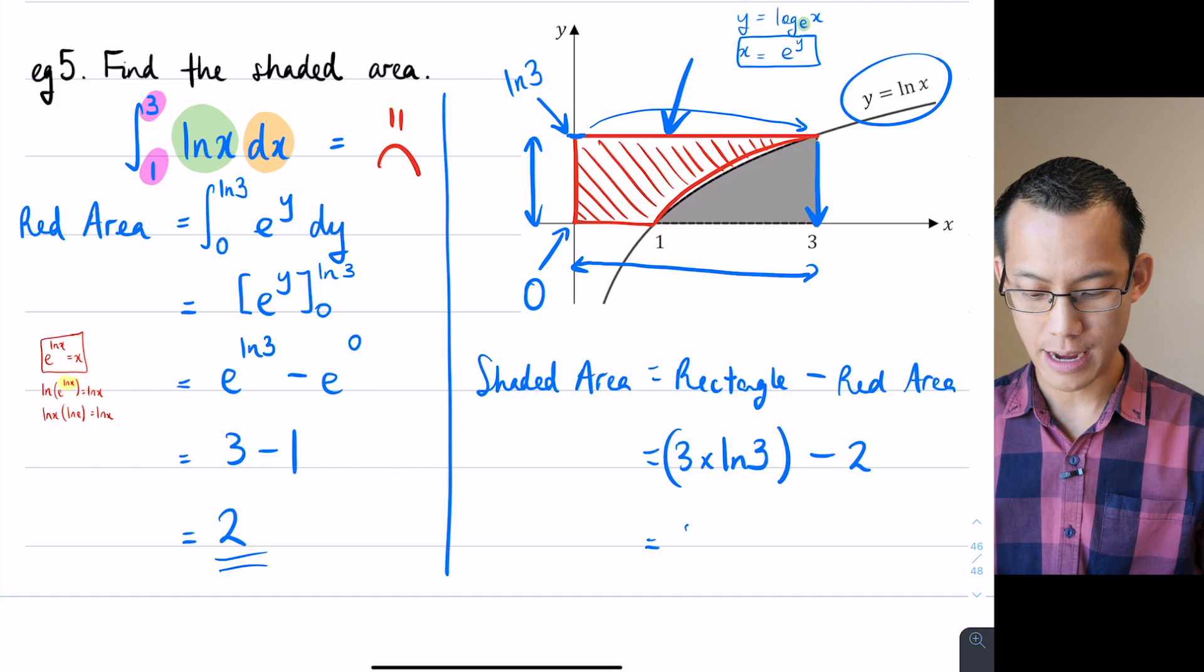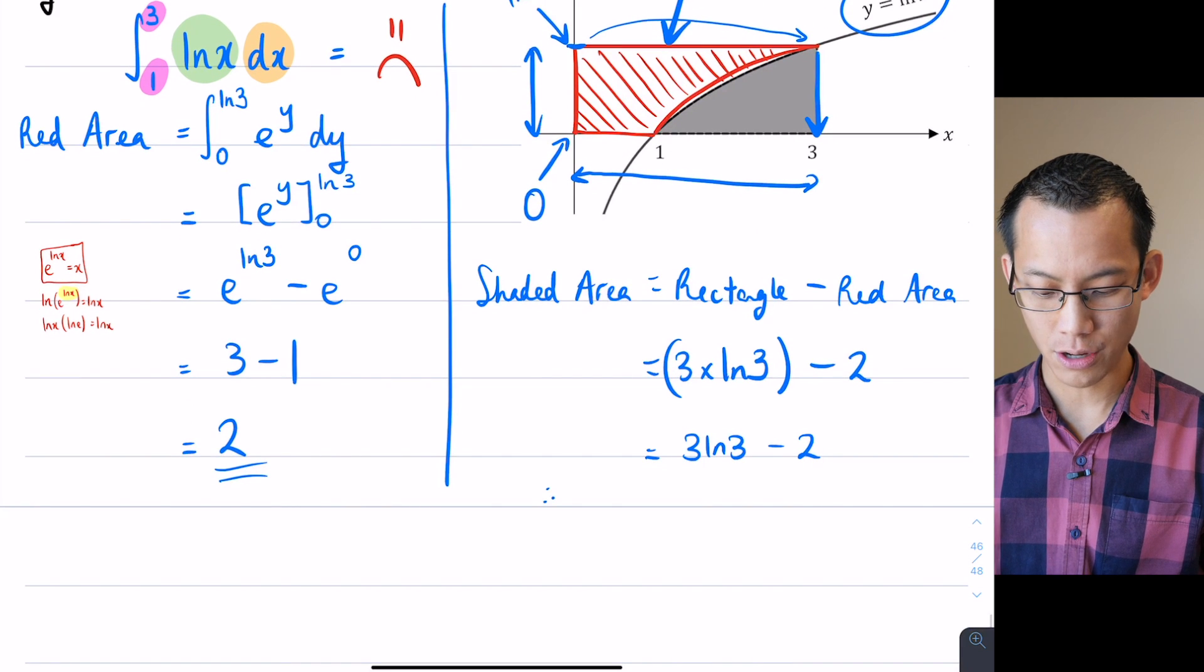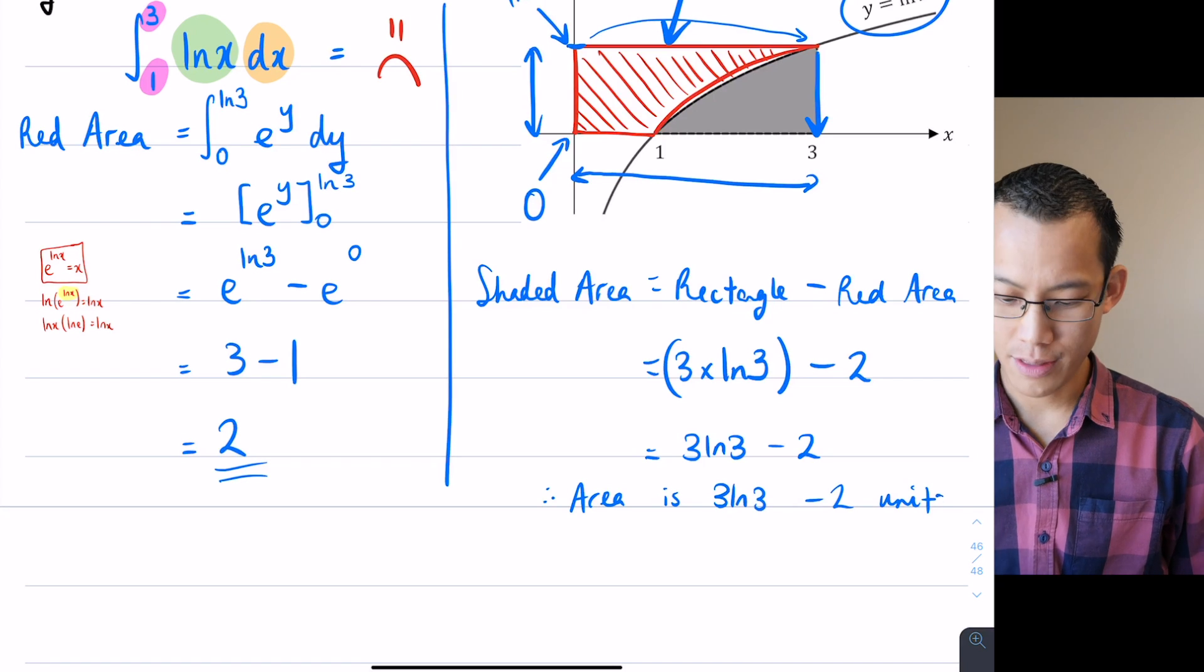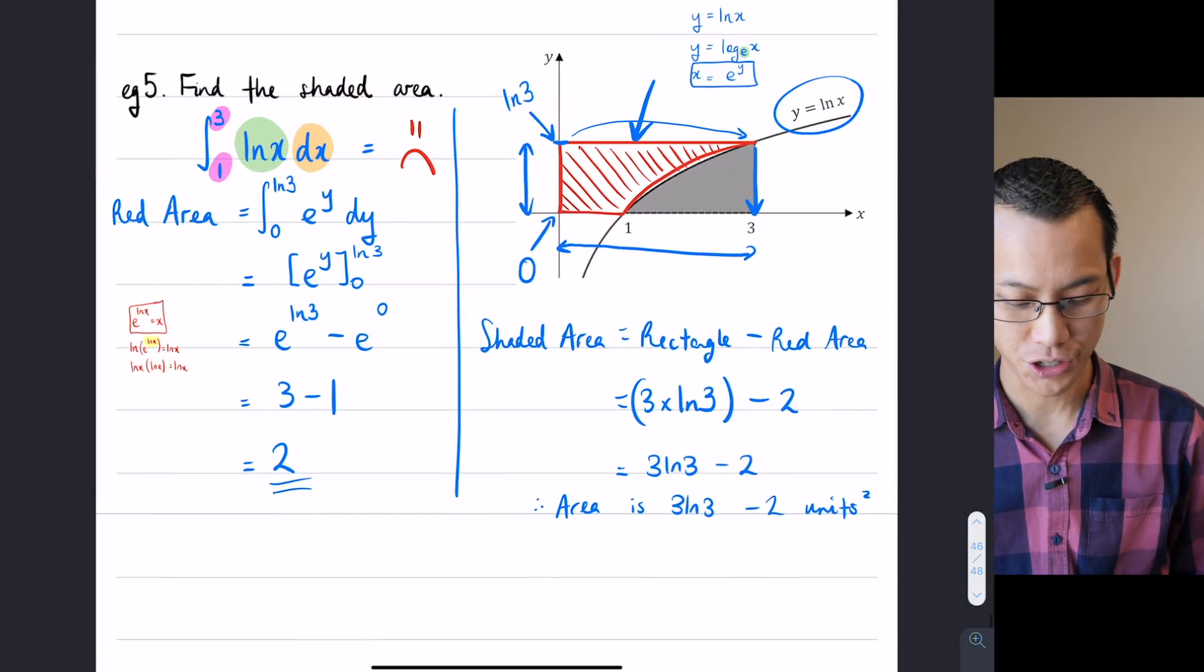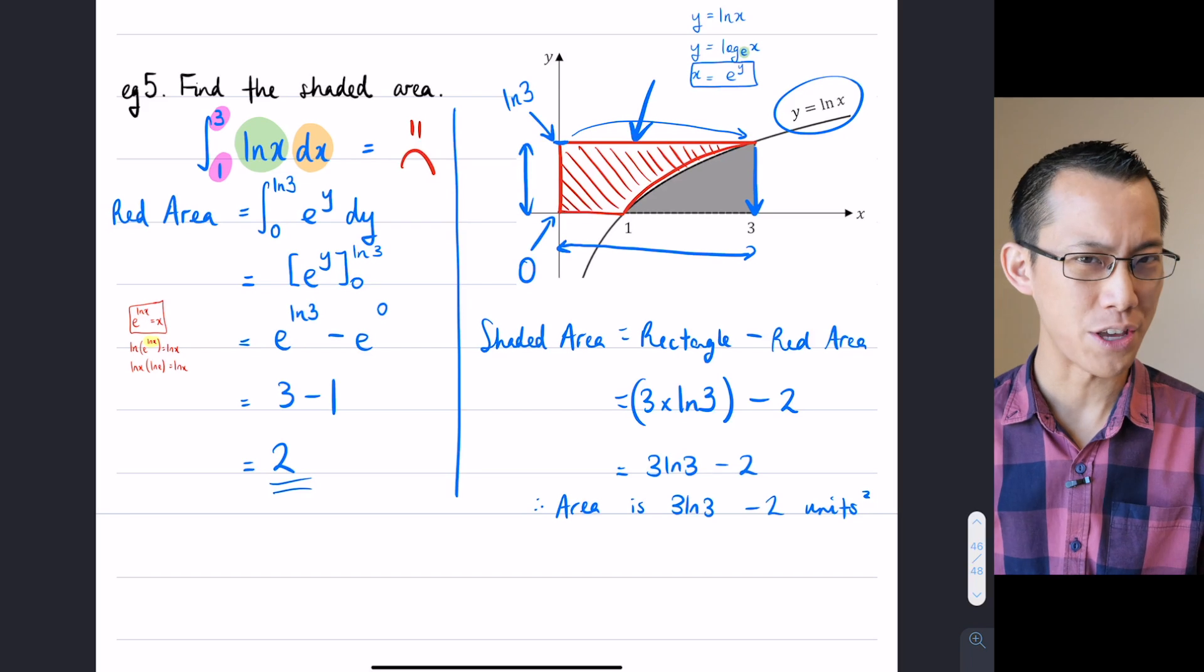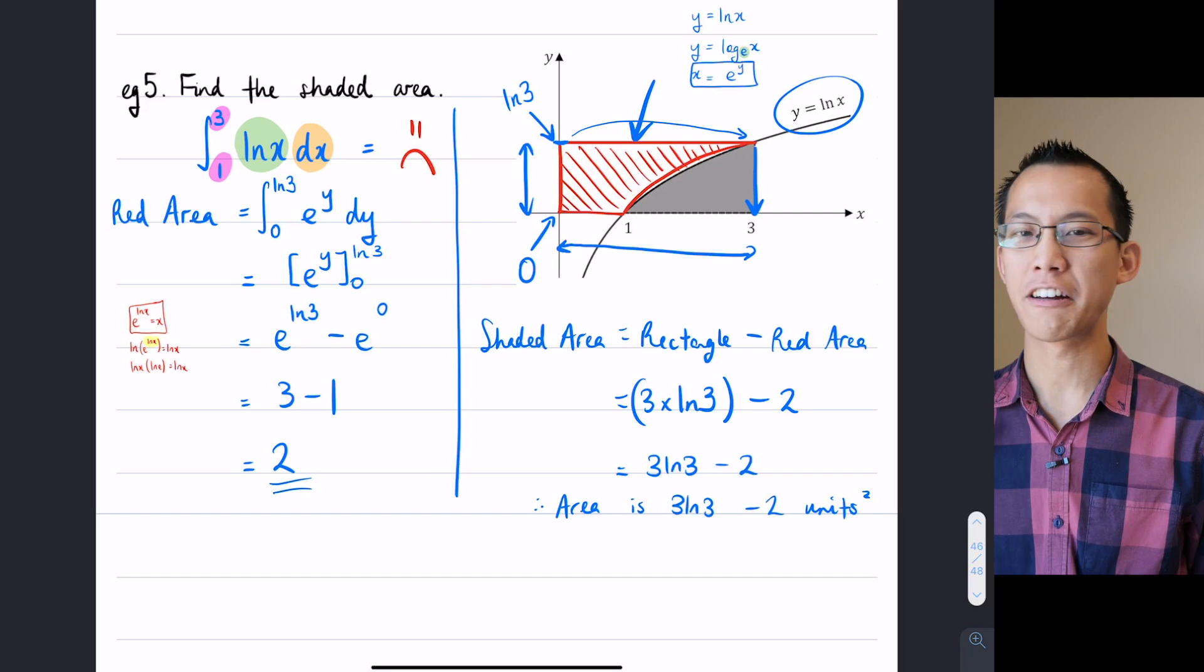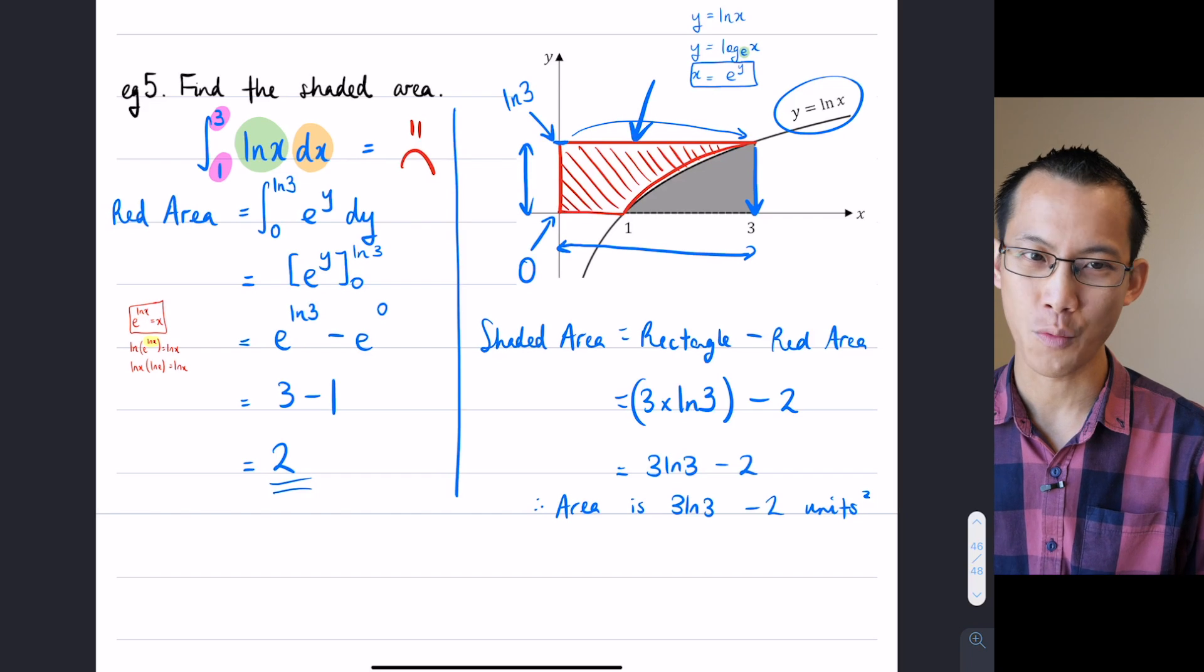And I would conclude by saying the area with units, so it's 3 log 3 take away 2 units squared. So this is a tough question. There was a lot to it. You had to think carefully about how you would approach it, and the trap for young players is to just say, oh it's log x and I can integrate that, when you're actually differentiating. So it's almost designed to try and see if you really know what you're talking about. But that's why these techniques—integrating with respect to y and getting other areas—are so handy, because they can help you work out a wide variety of questions.